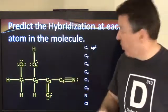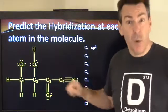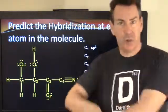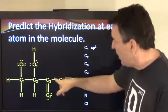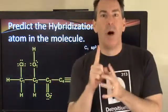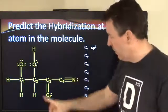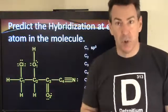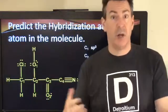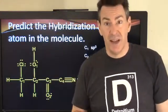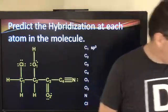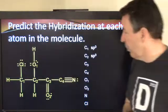Pretty much the same thing for carbon number two — it also has four single bonds coming off of it. Remember, just look at one atom at a time; don't try to count bonds across the whole molecule. Carbon number two has four total areas — single bond, single bond, single bond, single bond, no lone pairs — so SP3 hybridization there as well.